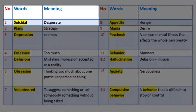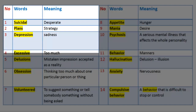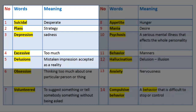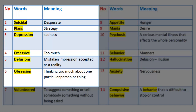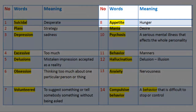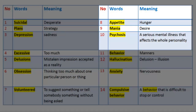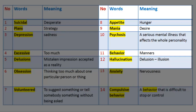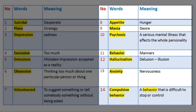Vocabulary 3. Suicidal: desperate. Plans: strategy. Depression: sadness. Excessive: too much. Delusions: mistaken impression accepted as a reality. Obsession: thinking too much about one particular person or thing. Volunteered: to suggest something or tell somebody something without being asked. Appetite: hunger. Mania: desired. Psychosis: a serious mental illness that affects the whole personality. Behavior: manners. Hallucination: delusion, illusion. Anxiety: nervousness. Compulsive behavior: a behavior that is difficult to stop or control.